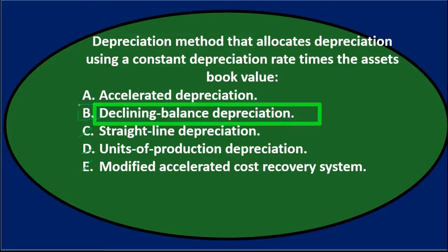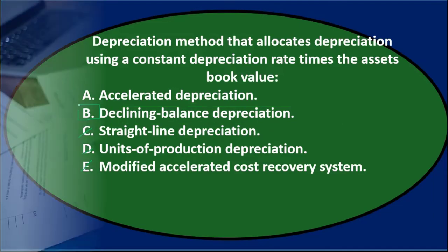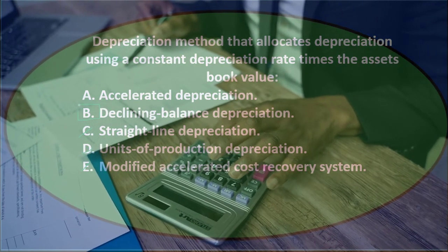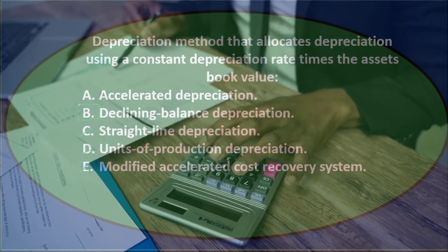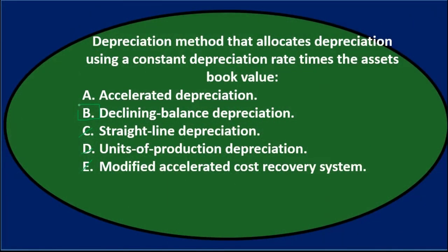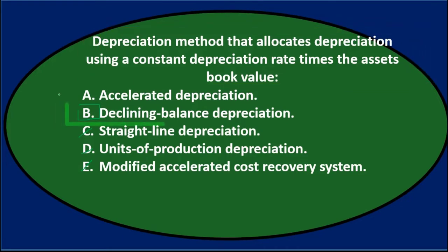B, the declining balance method, records book value times a particular rate in order to get depreciation per year. So the answer one more time: depreciation method that allocates depreciation using a constant depreciation rate times the asset's book value — B, declining balance depreciation.